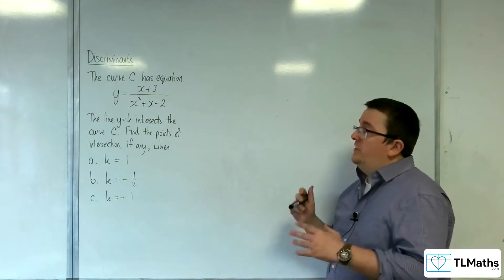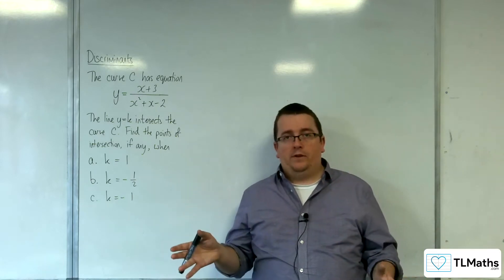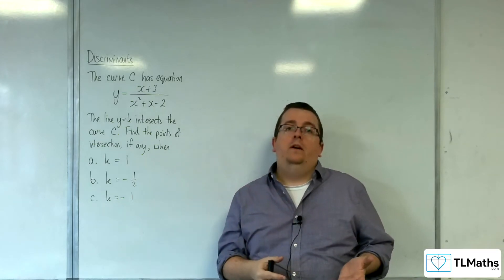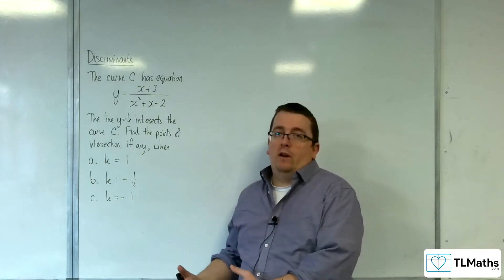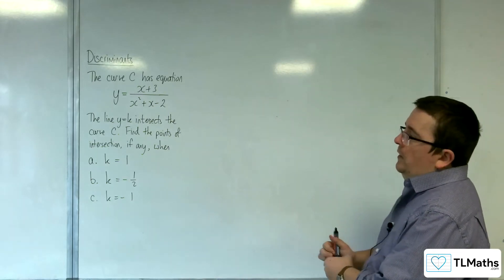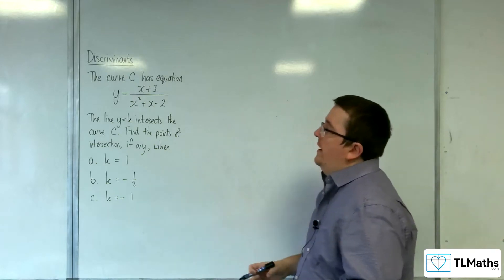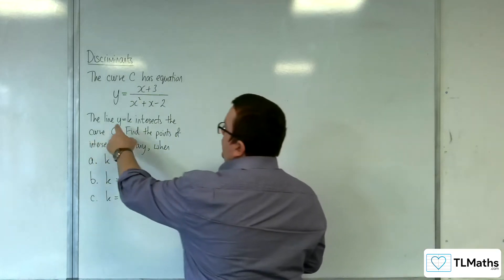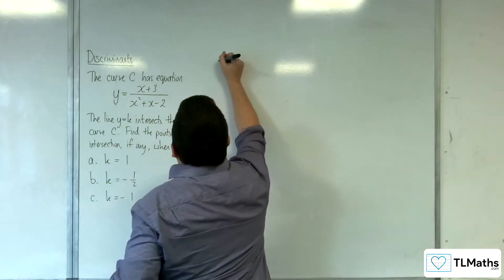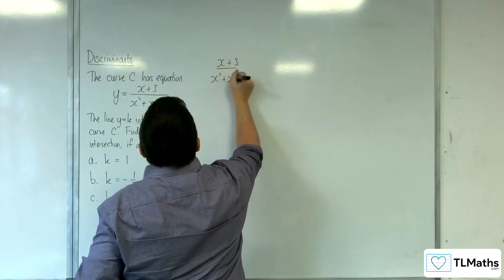What we're going to do is take this purely as an algebraic problem first. Then we're going to see graphically what's going on, and how we can generalise this. I'm not going to sketch the graph yet. I'm just going to go straight in and say, if it's intersecting the line y equals 1, then I can work out points of intersection by solving this equation.